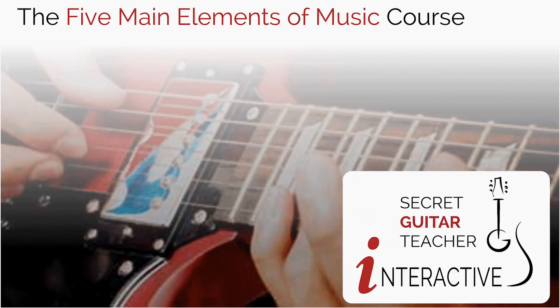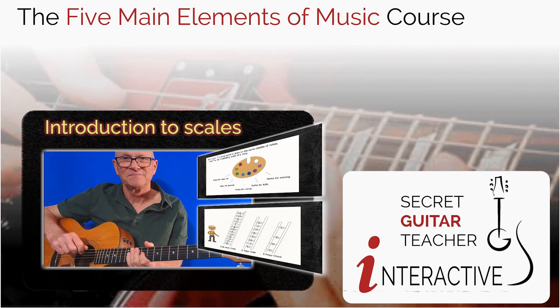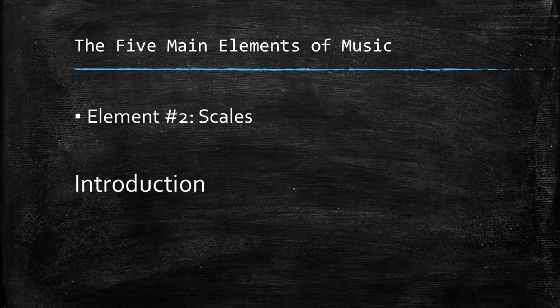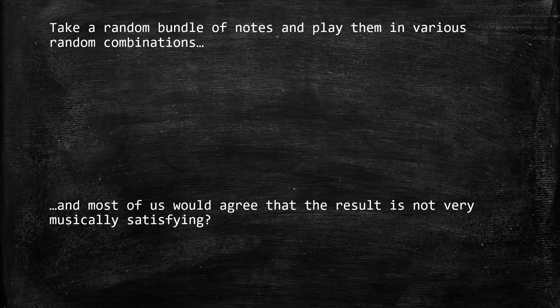This video is a sample from the Secret Guitar Teacher interactive course: The Five Main Elements of Music. Element number two: Scales — Introduction. Take a random bundle of notes and play them in various random combinations, and most of us will agree that the result is not very musically satisfying.